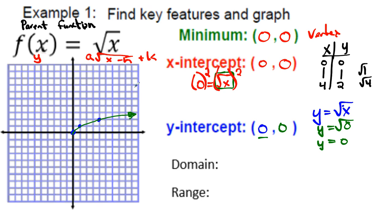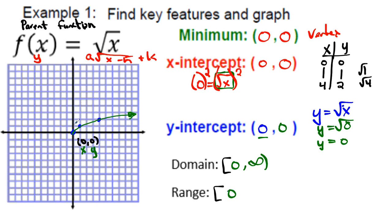Now for domain and range. The domain always starts with the x-value of your vertex, so it starts at zero and goes to positive infinity. The range starts with the y-value of the vertex, which is zero, and also goes to positive infinity — because this graph opens upward.